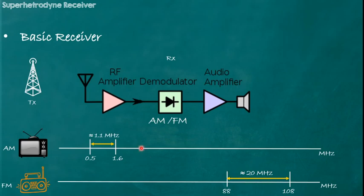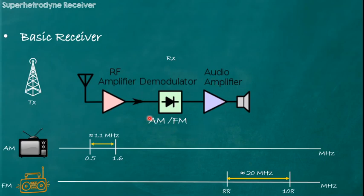These receivers consist of a collection of circuits which perform some tasks, and they have to perform over the wide range of 1.1 MHz and 20 MHz. That means all circuits must be able to work over this wide range of frequency, which is quite a complex thing to achieve. Your circuit may become quite complex. So how can we avoid this complexity?